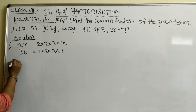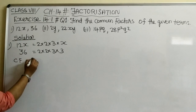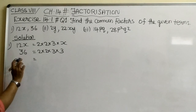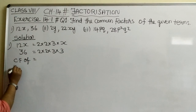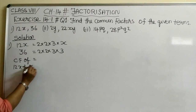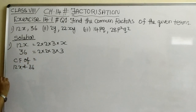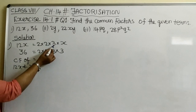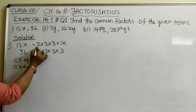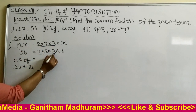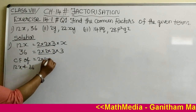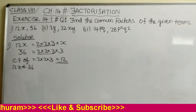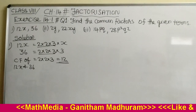Now we can find the common factors of 12x and 36. Looking at both factorizations: 2 is common, again 2 is common, and 3 is common. So 2 into 2 into 3, which equals 12, are the common factors. The common factors of 12x and 36 are 12.